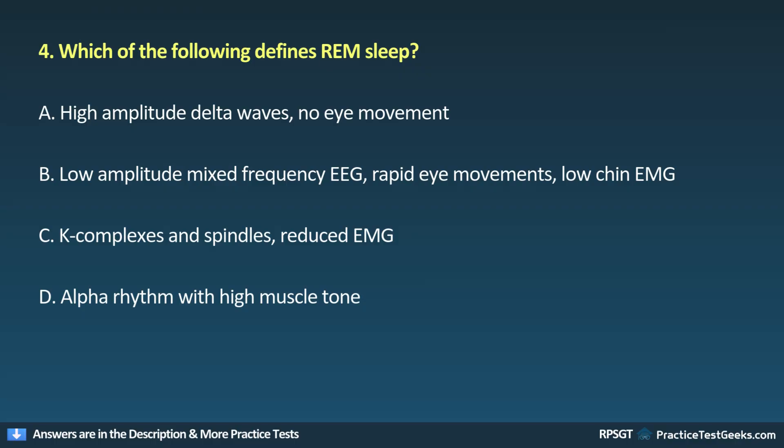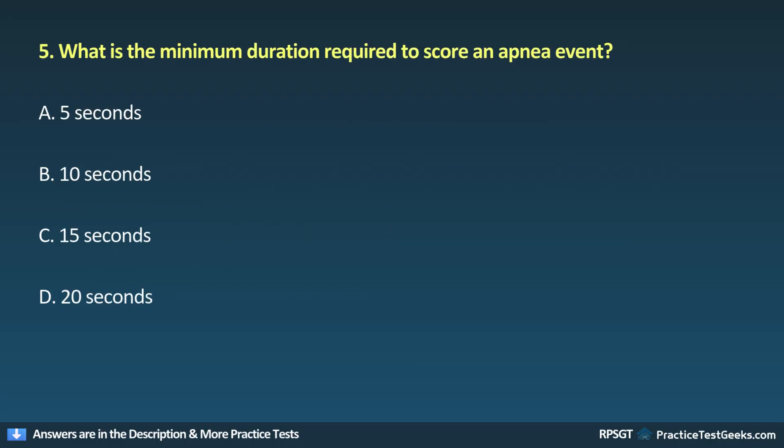Question 4: Which of the following defines REM sleep? A. High amplitude delta waves, no eye movement. B. Low amplitude mixed frequency EEG, rapid eye movements, low chin EMG. C. K complexes and spindles, reduced EMG. D. Alpha rhythm with high muscle tone.